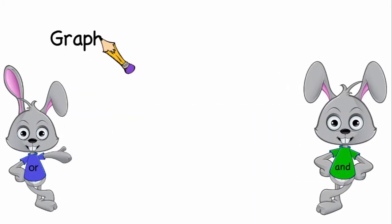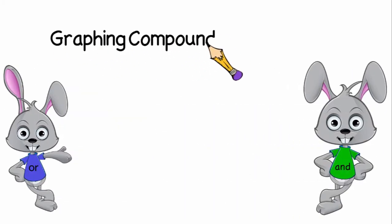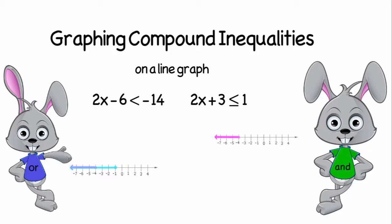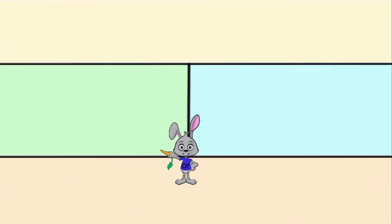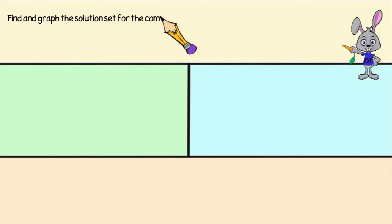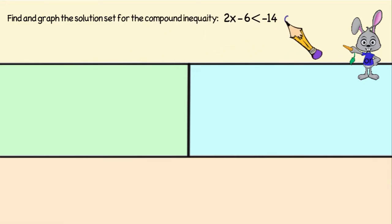Let's look at how to graph compound inequalities. A compound inequality is when you have two or more inequalities and you want to find a solution set that works for both of them. We're going to look at the problem: graph the solution set for 2x minus 6 is less than negative 14, or 2x plus 3 is less than or equal to 1.